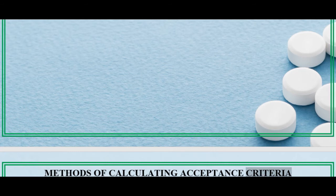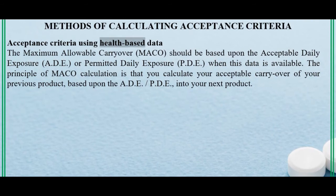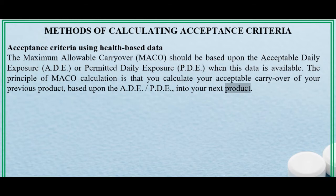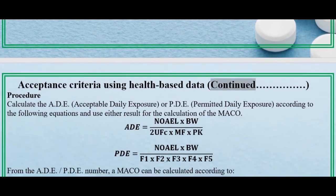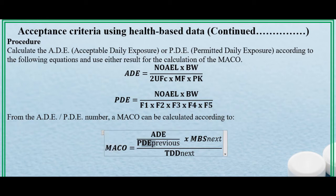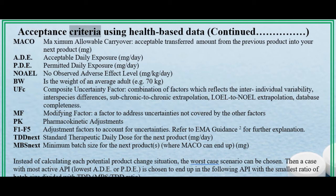Methods of Calculating Acceptance Criteria — Acceptance Criteria Using Health-Based Data: The Maximum Allowable Carryover (MACO) should be based upon the Acceptable Daily Exposure (ADE) or Permitted Daily Exposure (PDE) when this data is available. The principle of the MACO calculation is that you calculate your acceptable carryover of your previous product based upon the ADE/PDE into your next product. Procedure: Calculate the ADE or PDE according to the established equations and use either result for the calculation of MACO. From the ADE/PDE number, a MACO can then be calculated.